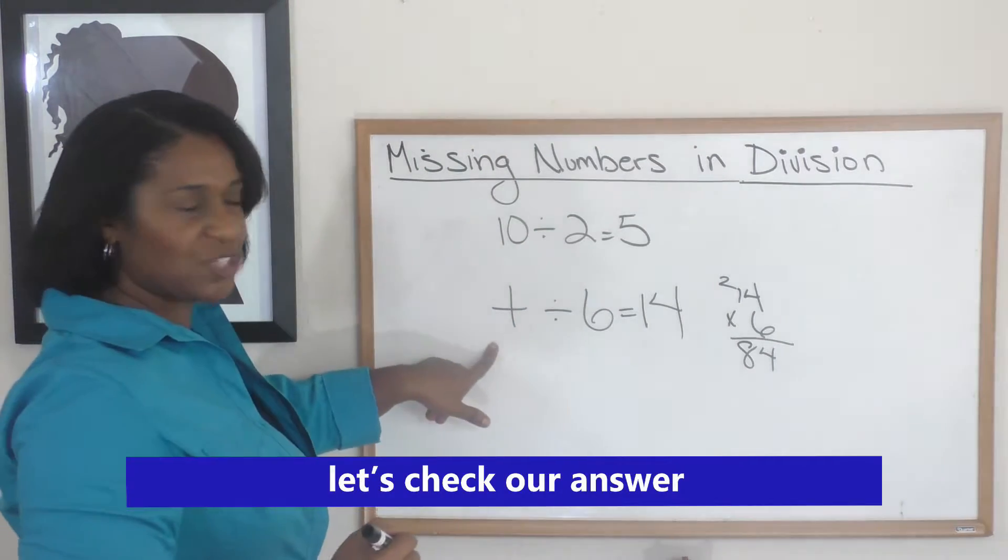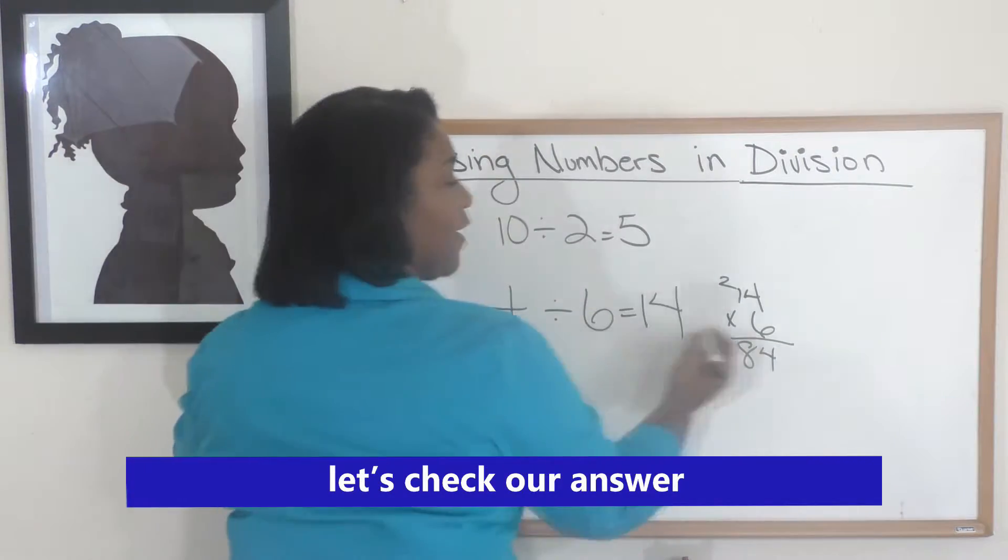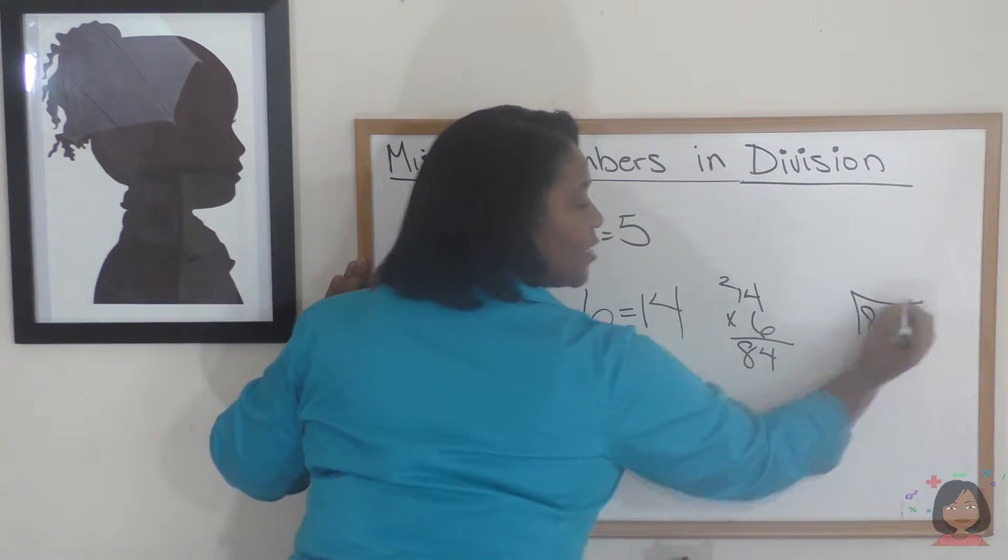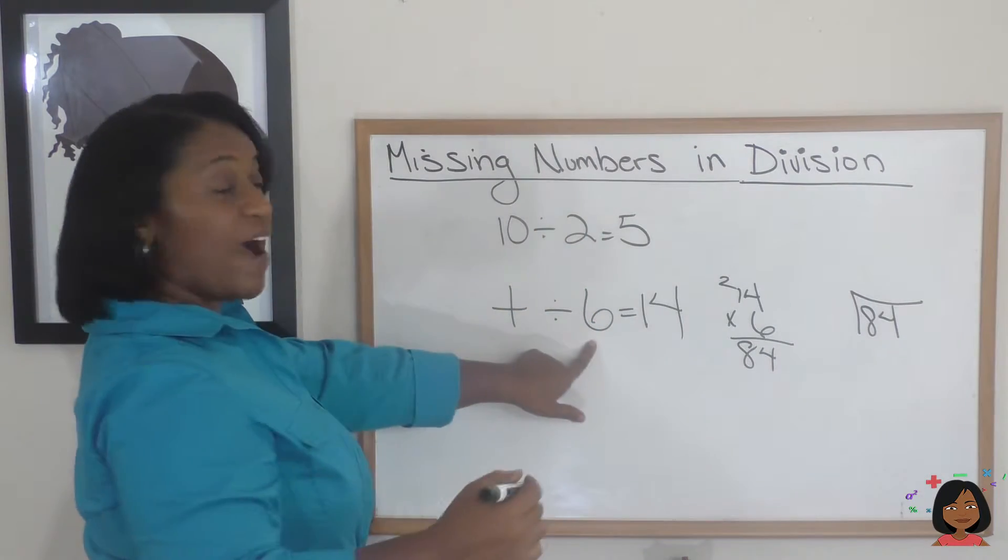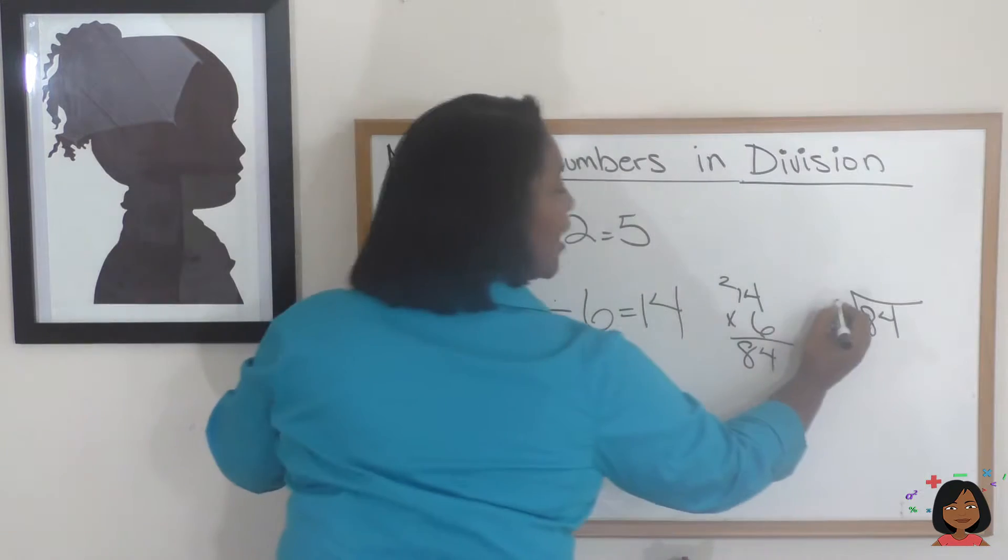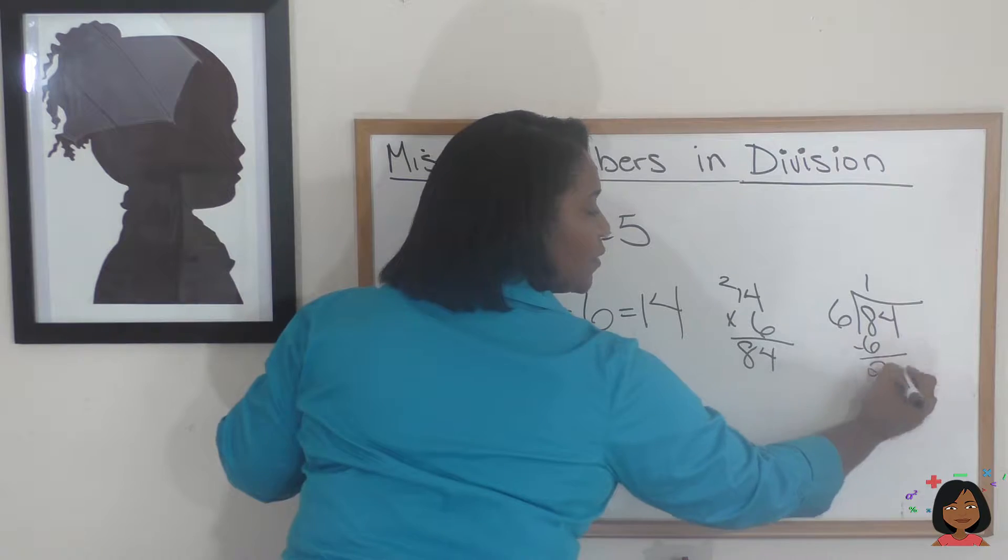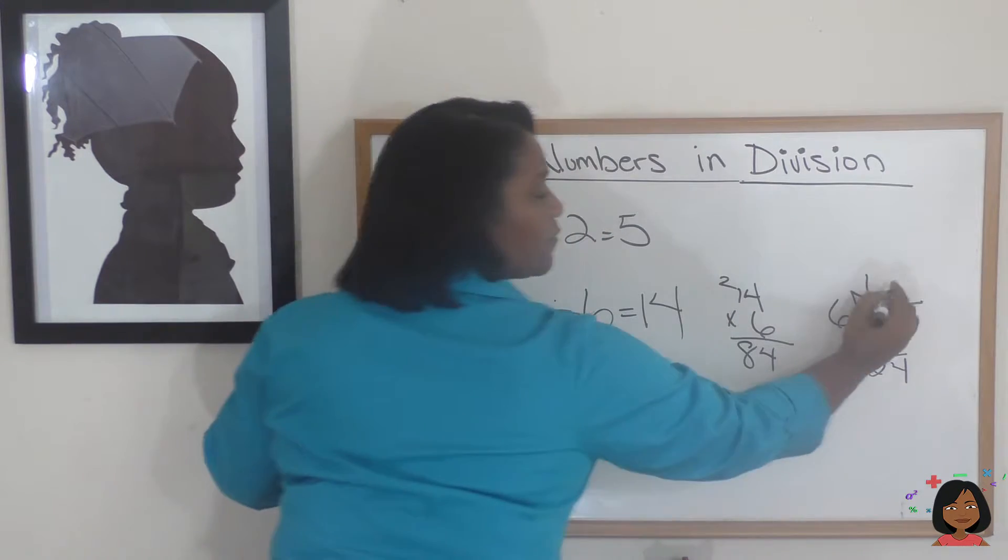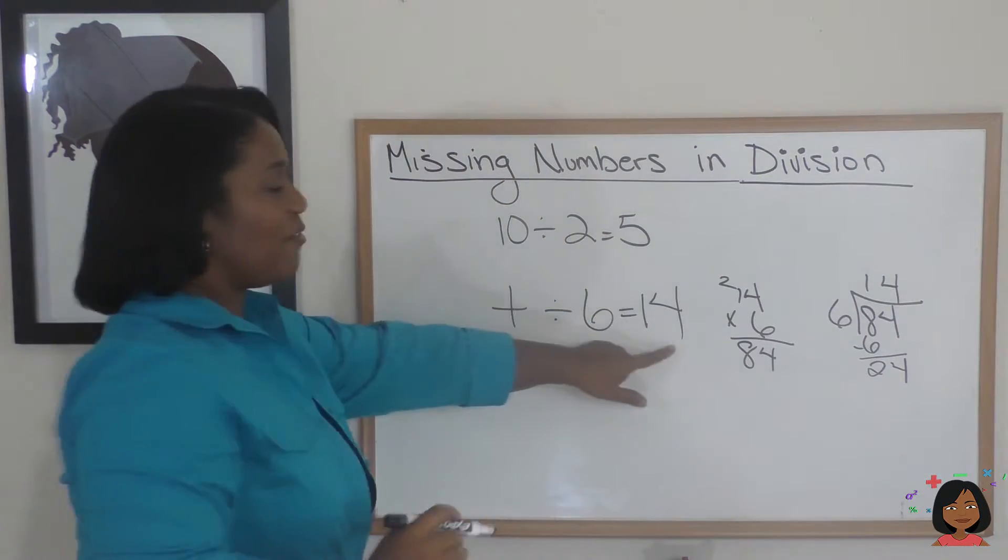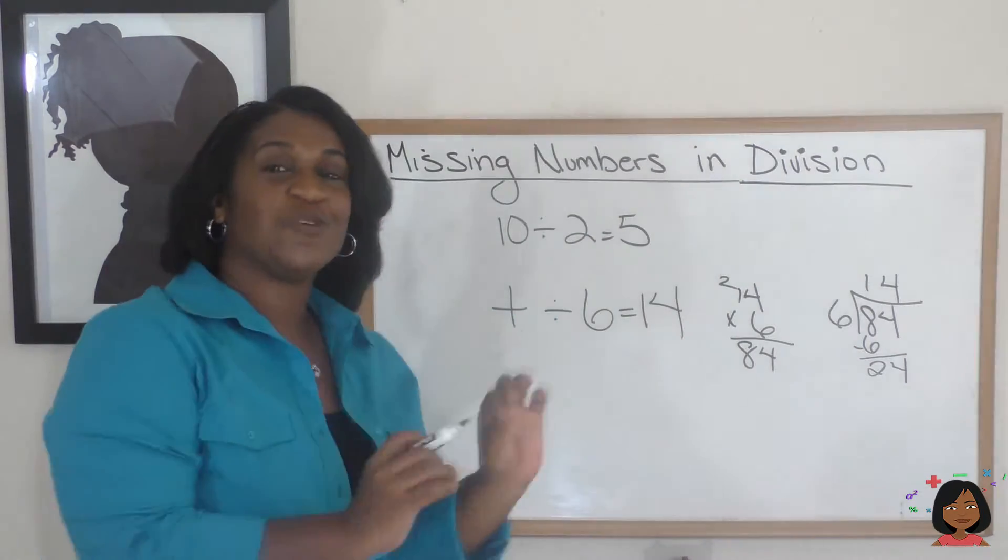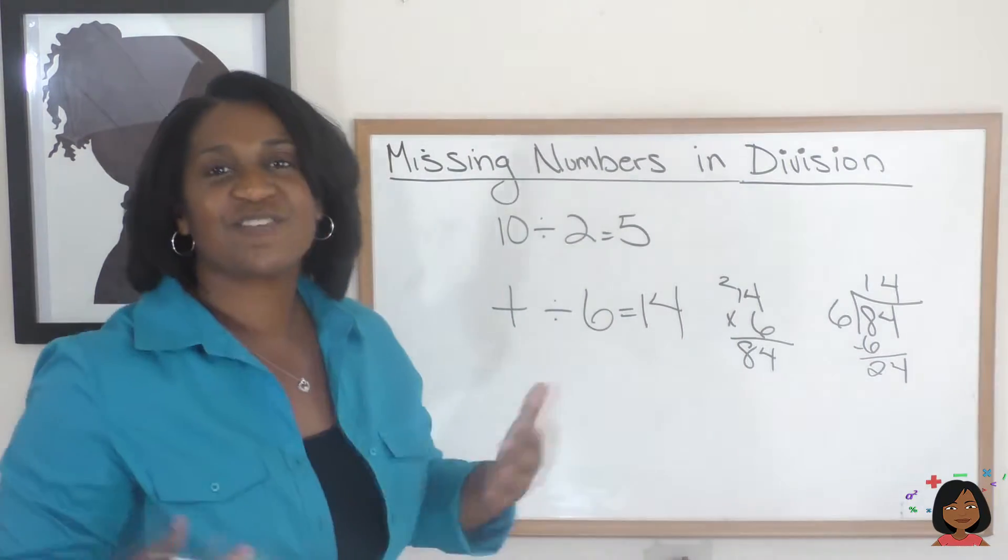Let's just check to make sure. What's 84 divided by 6? 84 is our dividend, so it goes on the inside. Our divisor is 6, so that goes on the outside. 6 into 8 goes one time, and 6 into 24 goes 4 times. So there you go, there's the right answer.